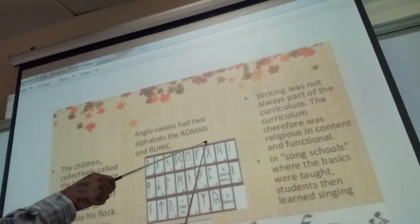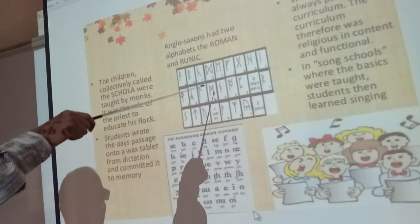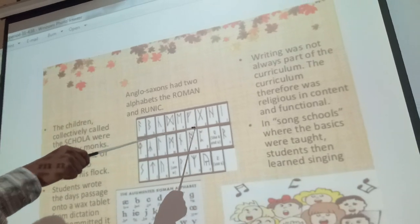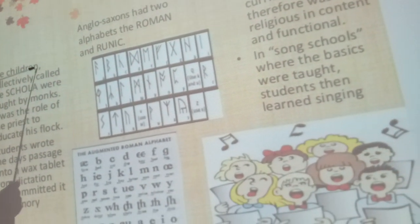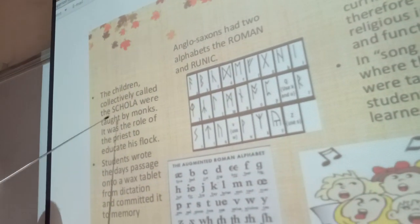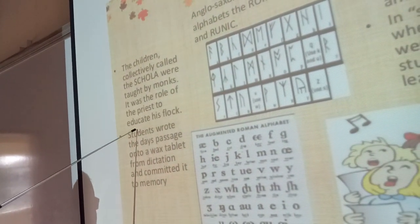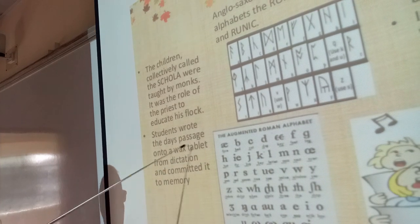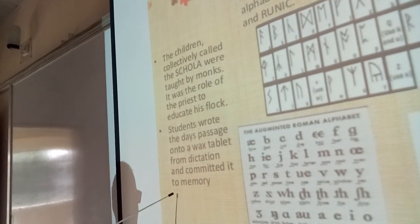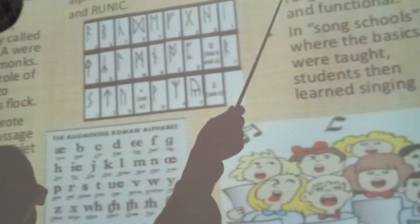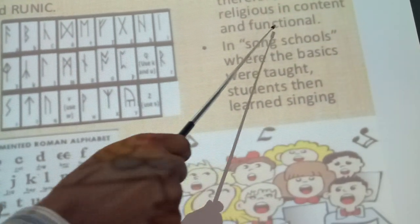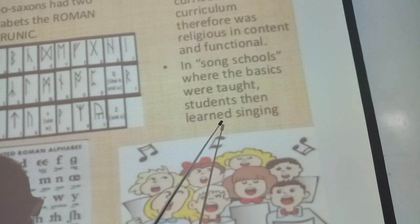Anglo-Saxon writing used two alphabets — the Roman and the runic. Students learned the alphabet from dictation and committed it to memory. Writing was not always part of the curriculum, which was religious in content and functional. In some schools where the basics were taught, students then learned singing.